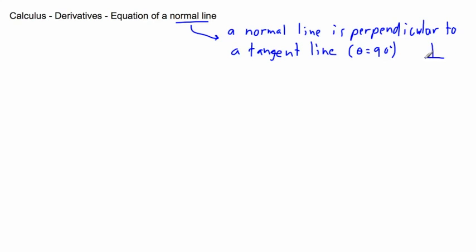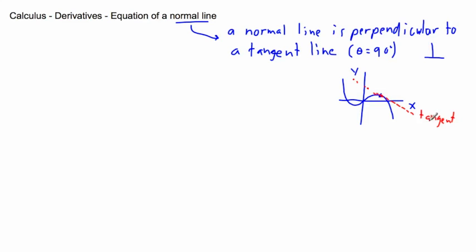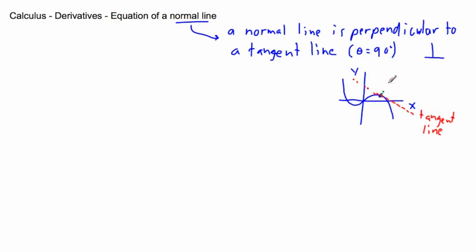To visualize this, consider some graph with an X and Y axis. At a given point on a curve, I've drawn the tangent line. The normal line passes through that same point but is 90 degrees to the tangent — that is the normal line.